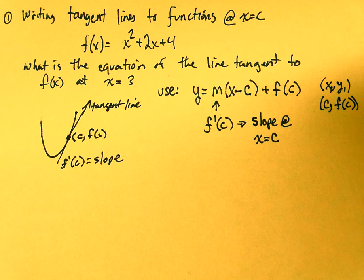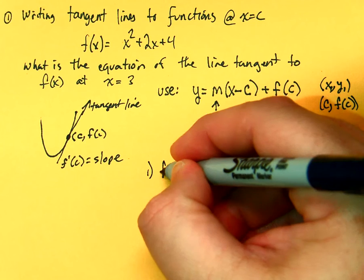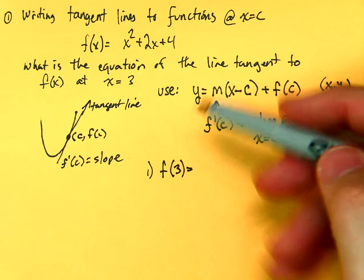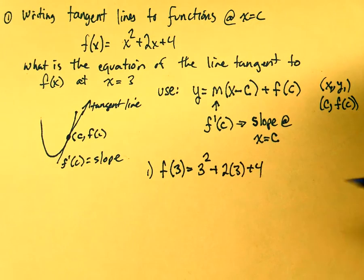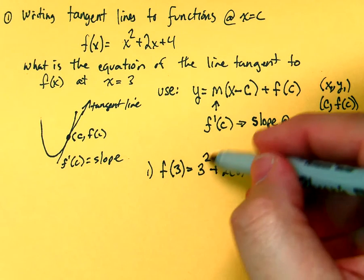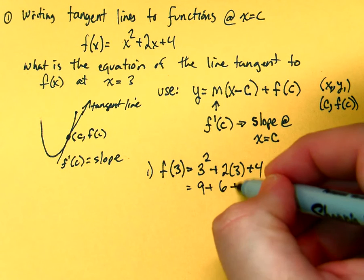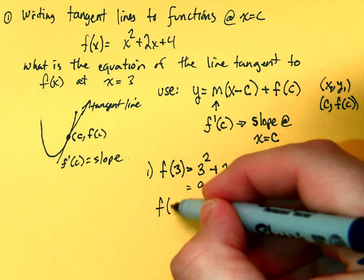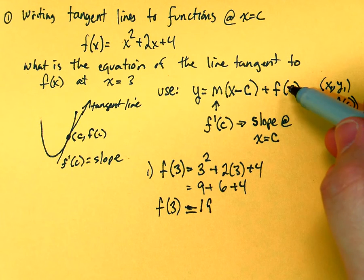So, now what we have to do is we have to figure out all the pieces that are going to go into the equation. So, 1, what's f of 3? 3 squared plus 2 times 3 plus 4. Just plug it in and go. So, that's 9 plus 6 plus 4, which is 19. So, f of 3 is equal to 19. So, that'll give me this guy right here. So, I know that's 3, that's a 19.